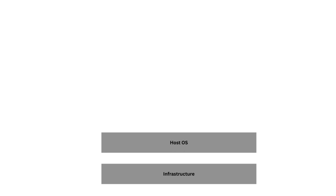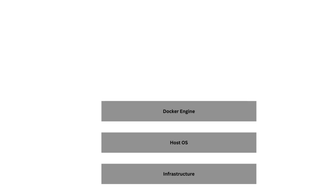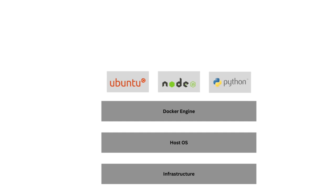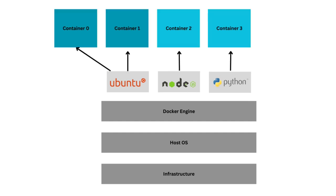After the infrastructure layer, the operating system layer comes into the picture. Linux is the popular operating system for containerization and is the first choice for most developers. Once the server setup is ready, the container engine comes into the picture. This engine creates containers from container images, manages multiple containers on the same server, and acts as a communication medium between the operating system and the containers.